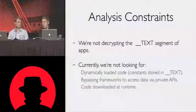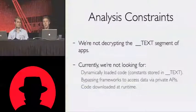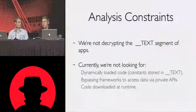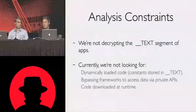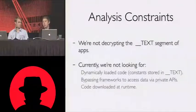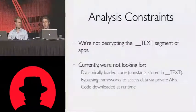The constraints on what we're analyzing: we're not analyzing the text section, so that limits the amount of automated static analysis we can do without decrypting things. If people find ways to decrypt, more will happen. We're also not looking for dynamically loaded code, because the constants are typically stored in text, and also bypassing frameworks via private APIs — a lot of this stuff won't be able to get into the App Store anyway. And code downloaded at runtime: if you exploit libtiff in your iPhone app and you're downloading code at runtime, we're obviously not going to be able to catch that.